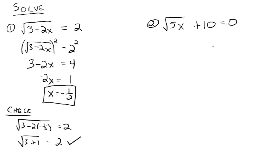Let's go over to the second one. The idea is to isolate, if you can, a radical. So move the 10 over. We have the square root of 5x equals negative 10. Get a radical isolated before you square both sides, or cube both sides, or whatever you need to do, because if this was a cube root of 5x, then we would be cubing both sides.